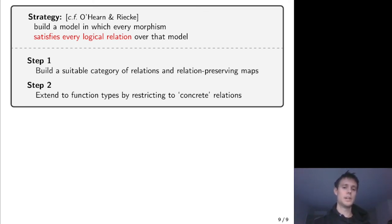We do this in two stages. We first build a category of relations and relation-preserving morphisms, and then we internalize this relation-preserving property by restricting to those relations that are called concrete.